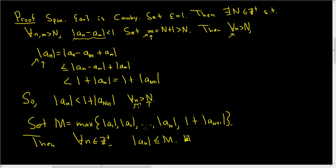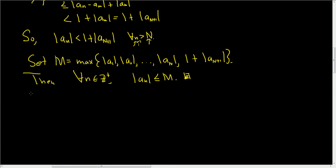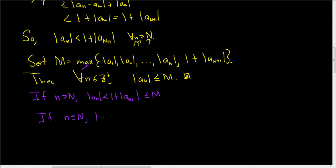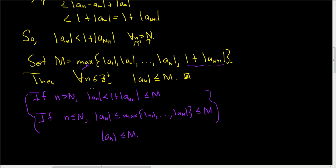If this last step is unclear, let's clarify it. If n is bigger than capital N, we know that |a_n| is less than 1 plus |a_{N+1}|, and that's certainly less than or equal to big M because big M is the max of all of this. If n is less than or equal to N, then |a_n| is less than or equal to the max of these terms, and that's certainly less than or equal to big M because big M includes that value. So in any case, |a_n| is less than or equal to big M. I hope this video made some sense.